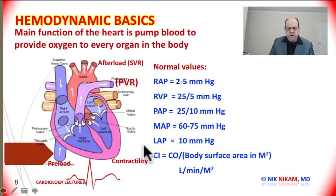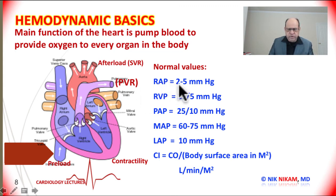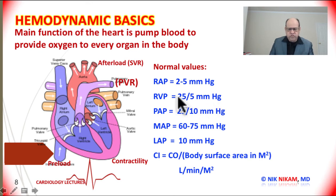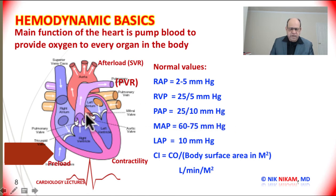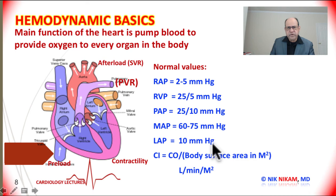Let us look at some normal hemodynamic values we must be familiar with. The mean right atrial pressure can vary between 2 and 5 mmHg. The right ventricular pressure is 25 over 5 mmHg — systolic over diastolic. Pulmonary artery pressure is 25 over 10 mmHg. The mean arterial pressure could be anywhere from 60 to 80 mmHg. The mean left atrial pressure is approximately 8 to 10 mmHg.